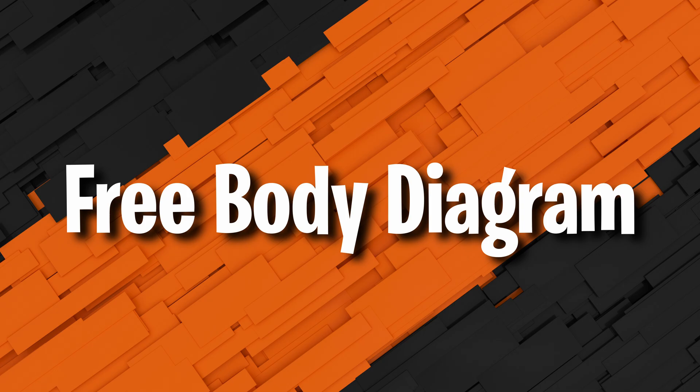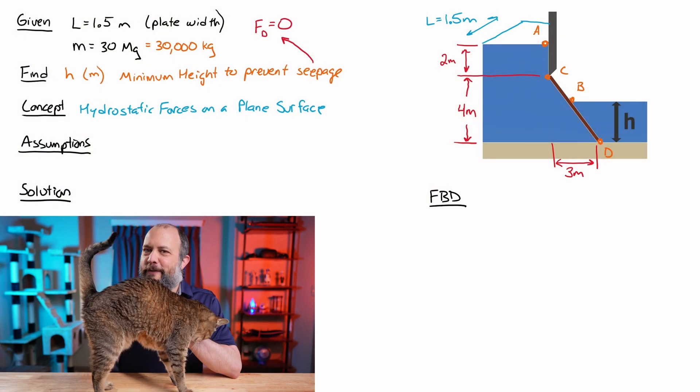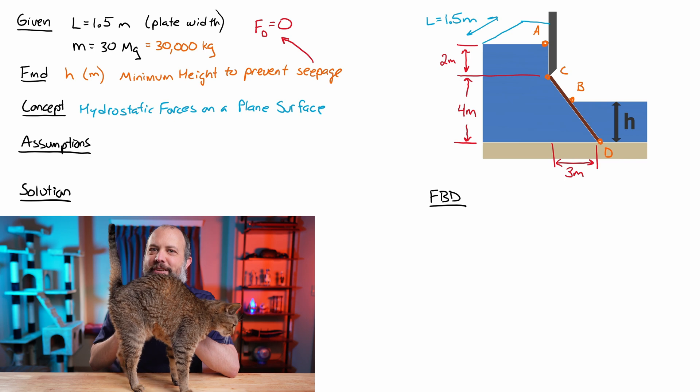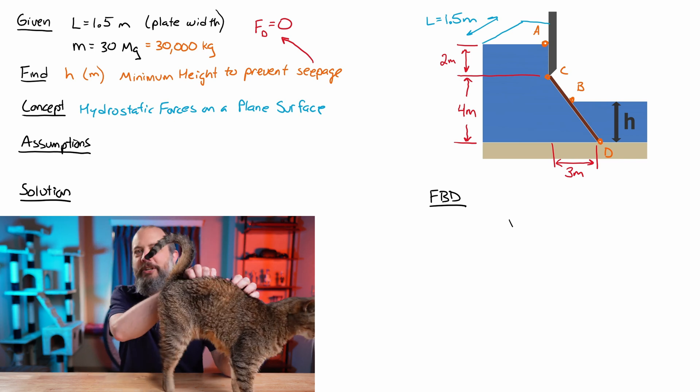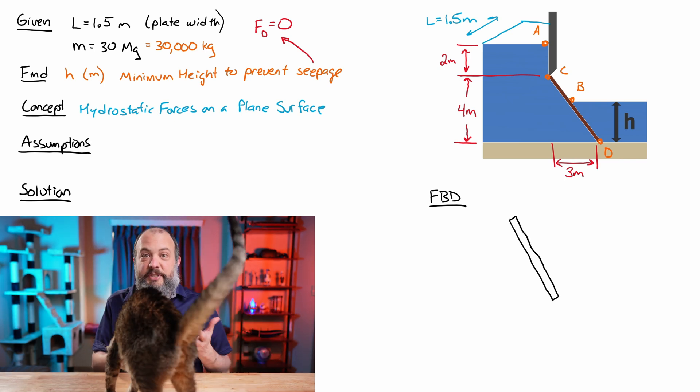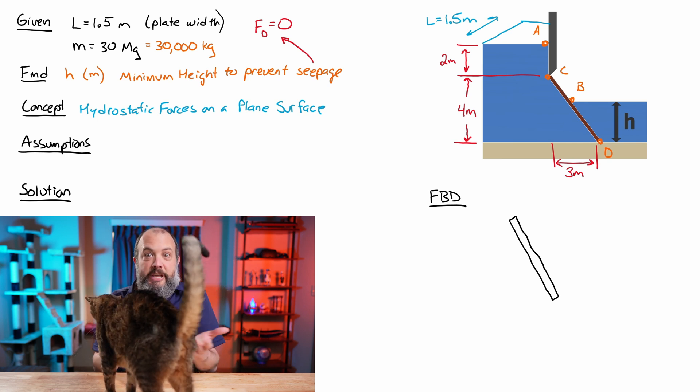This is a force problem. That means you're going to have to draw a free body diagram. And fair warning, this will probably be kind of a messy free body diagram due to all of the distributed loads. So since the gate is the object that's potentially rotating, that is the free body.